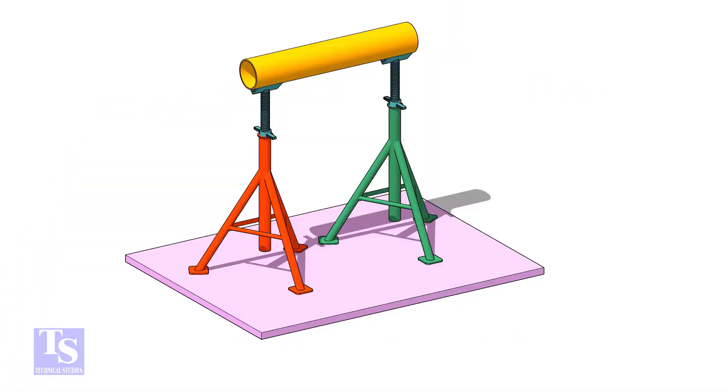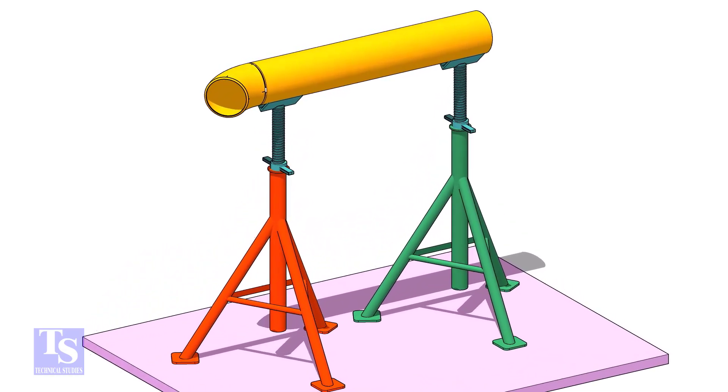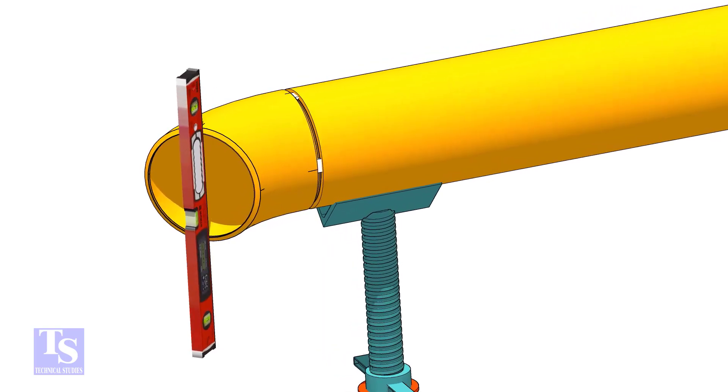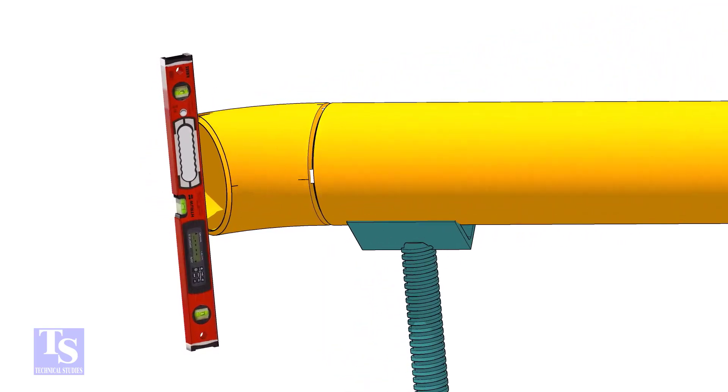Tack weld one elbow on a piece of the same size pipe. Level the elbow face through the center marks.